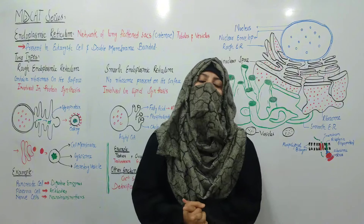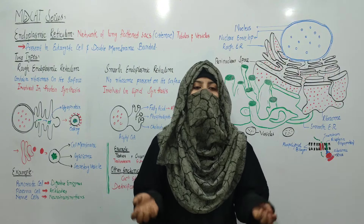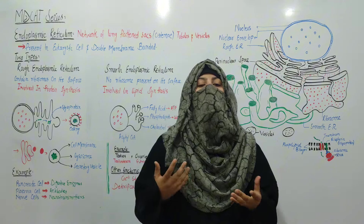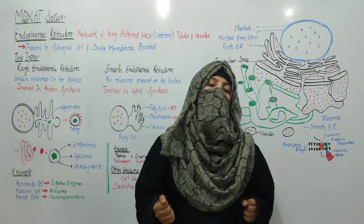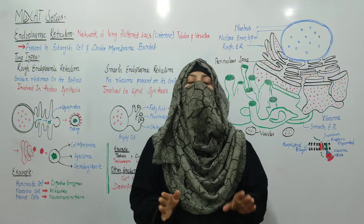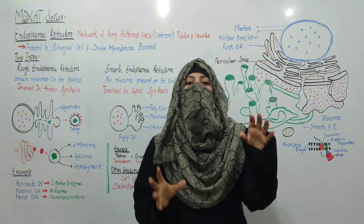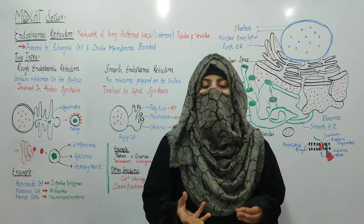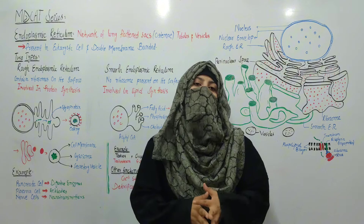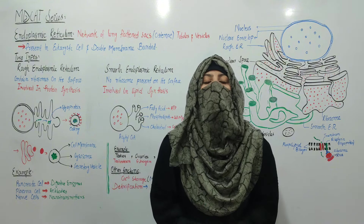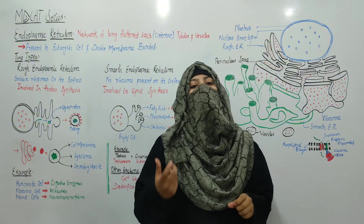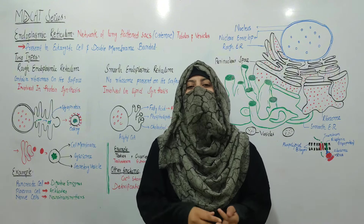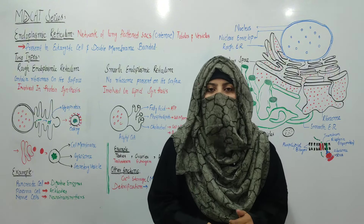In the last lecture, we covered the plasma membrane, cell membrane, cell wall, and we had to study cytoplasm. Today we will start with organelles. There are discrete structures or membrane-bounded structures which we call organelles.